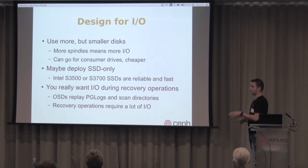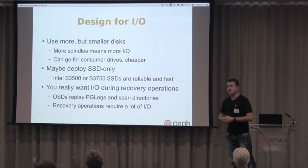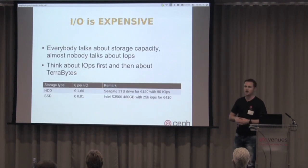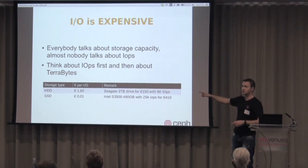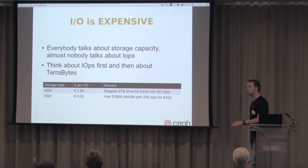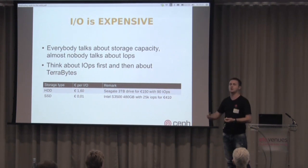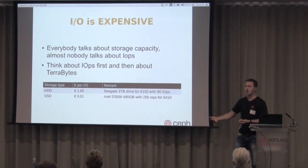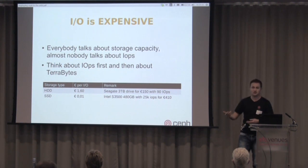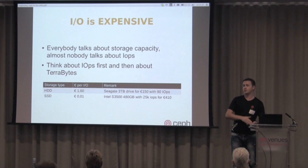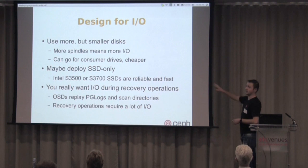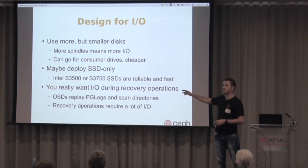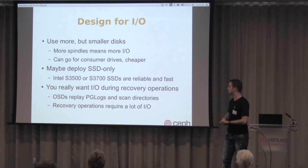Maybe go for SSD only. We're designing for IO, and if we're looking for IOs, SSD is the best option. Yes, Ceph itself may need optimization to get maximum performance out of SSDs, but SSDs will still give you far better performance than spinning disks. I would recommend the Intel data center series — not cheap, but not that expensive either, and they give you a good bang for your buck.